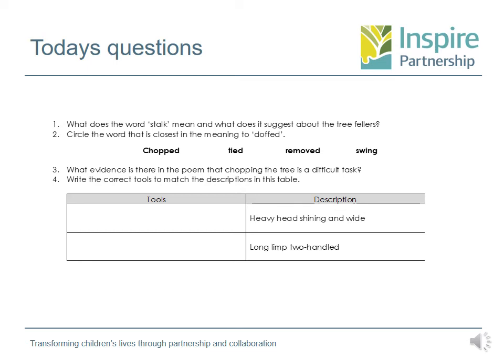I wonder if I've already spoken about 'doft' — you might want to rewind this video, as it might help you there. Then the question is: what evidence is there in the poem that chopping the tree is a difficult task? Remember, when I'm asking for evidence, you need to go searching for it inside that piece of text because the answer will be in there. Finally, write the correct tools to match the descriptions in the table — read through the text to see what tool they might be using to complete the task.